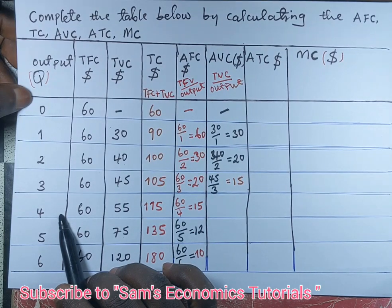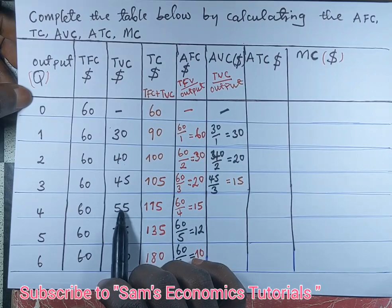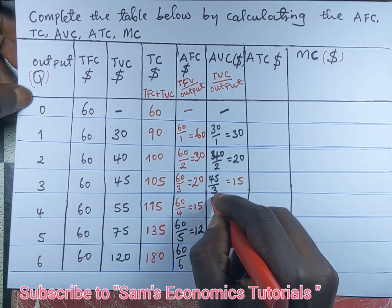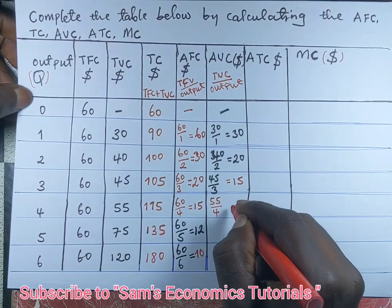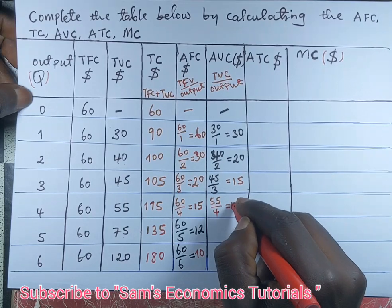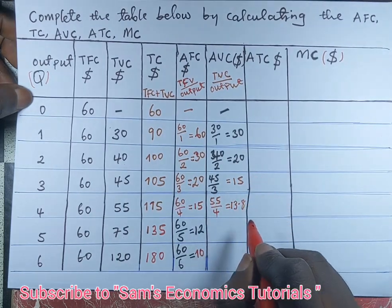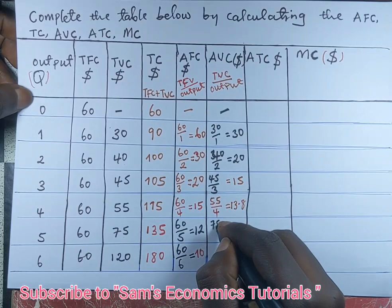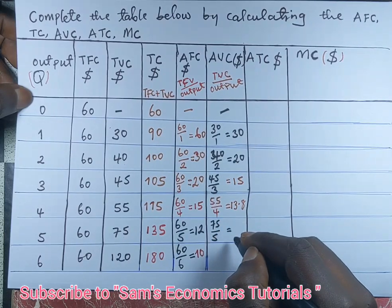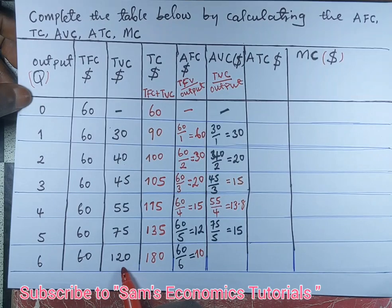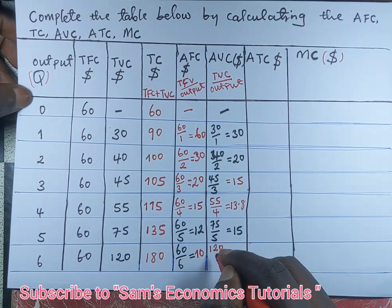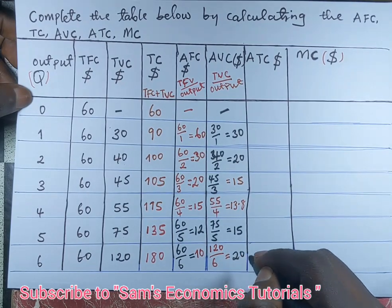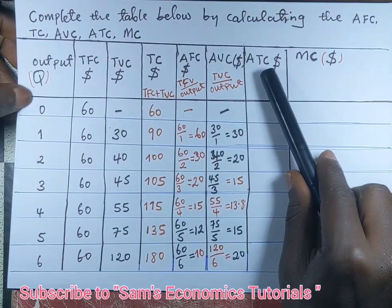When four units of output are produced, total variable cost is 55, so we divide 55 by 4, giving us 13.75 US dollars per unit. When five units are produced, total variable cost is 75, so we divide 75 by 5, giving us 15 US dollars per unit. When six units are produced, total variable cost is 120, so we divide 120 by 6, giving 20 US dollars per unit.